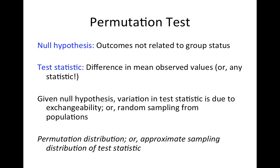Instead of calling it a randomization distribution, we call it a permutation distribution. Another way to phrase it, more appropriate for the fact that we didn't actually randomize, would be to call it an approximate sampling distribution of the test statistic. To do a permutation test, you take a data set where you did not actually randomize the two groups, pretend you did, and look at all possible randomizations in order to get your reference distribution.